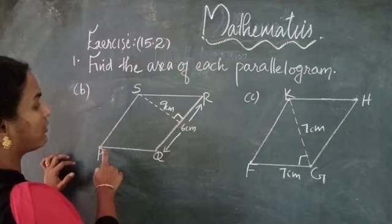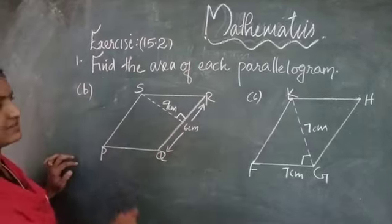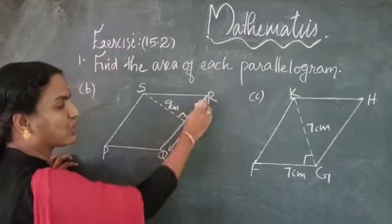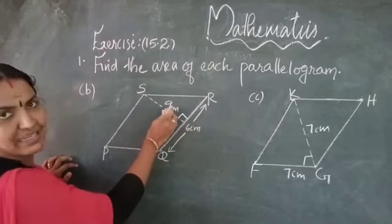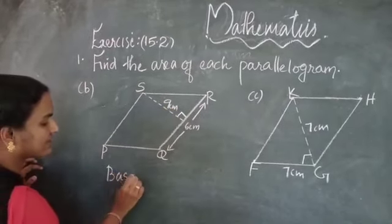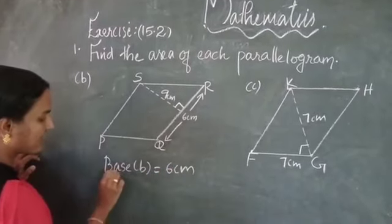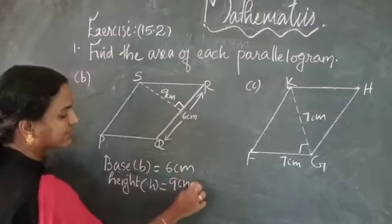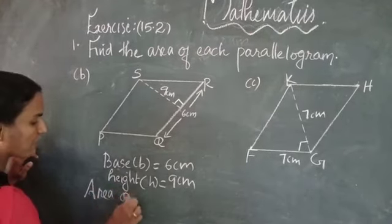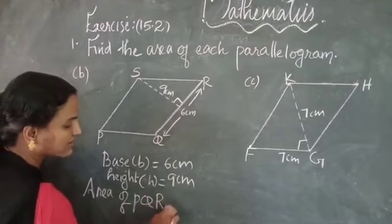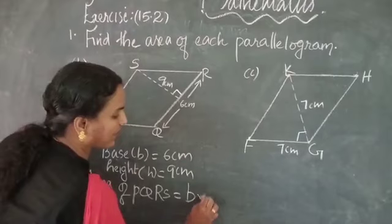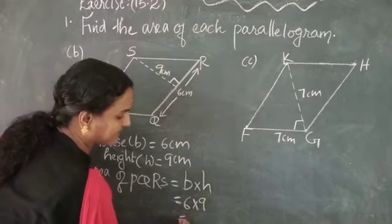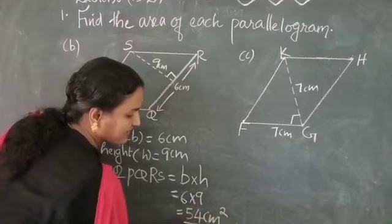Option B: Area of parallelogram PQRS. We have to find the area. Given: base QR equals 6 cm, height equals 9 cm. So B equals 6 cm and H equals 9 cm. Area of PQRS equals base into height, which is 6 into 9. Six nines are 54, so the area equals 54 cm².